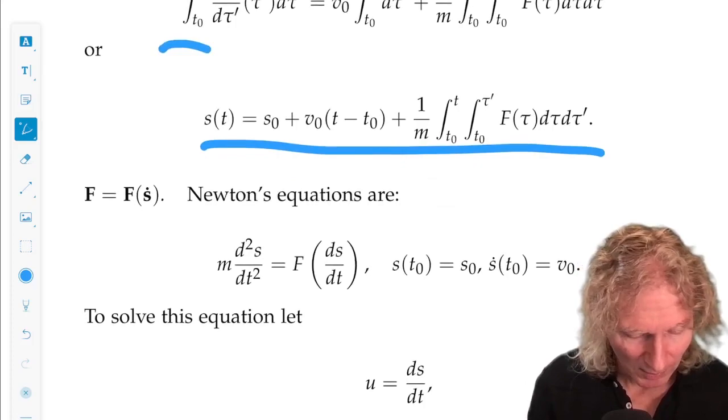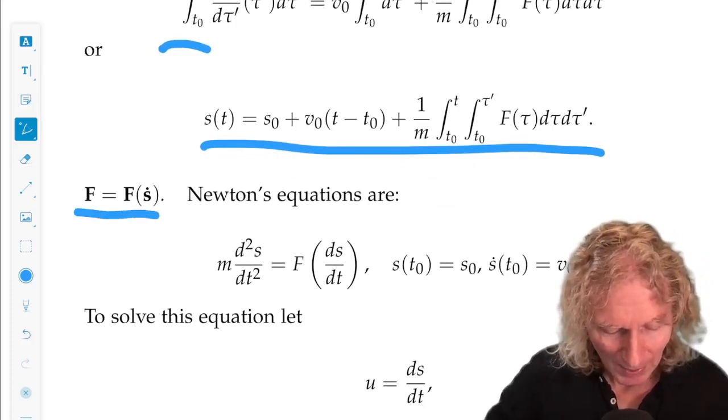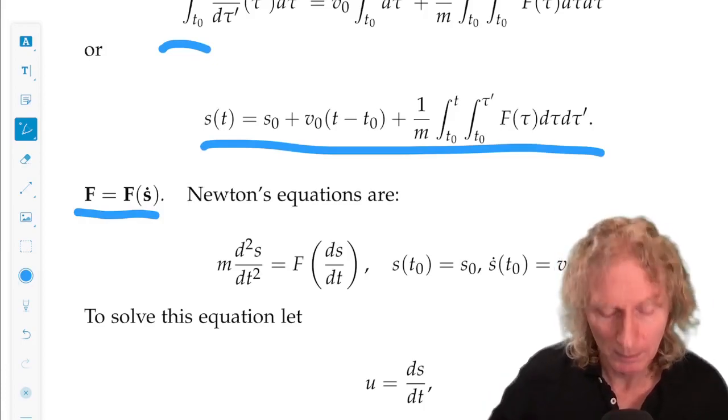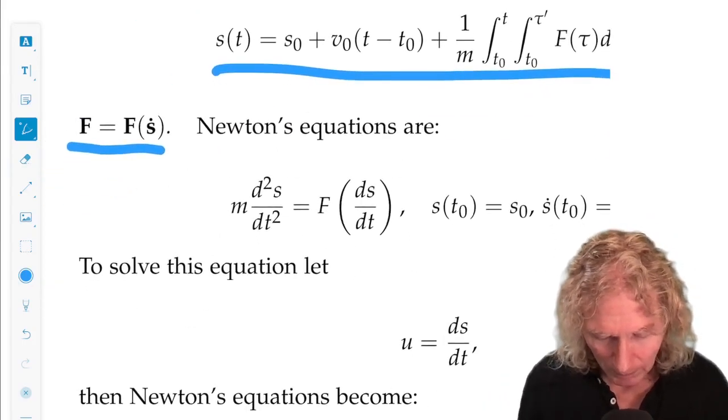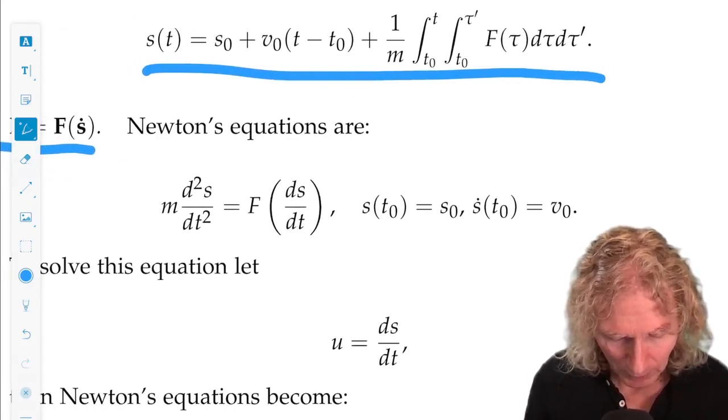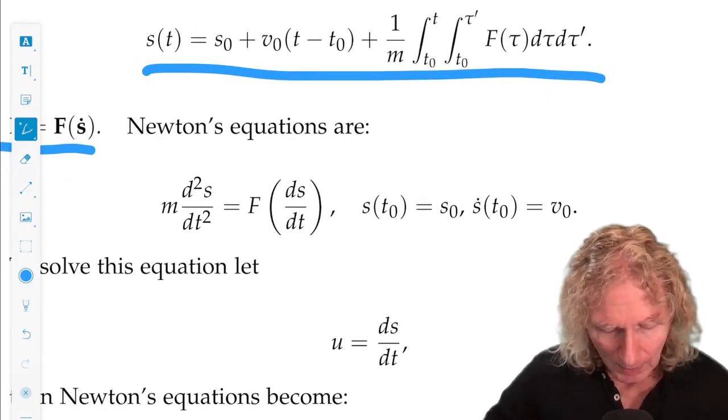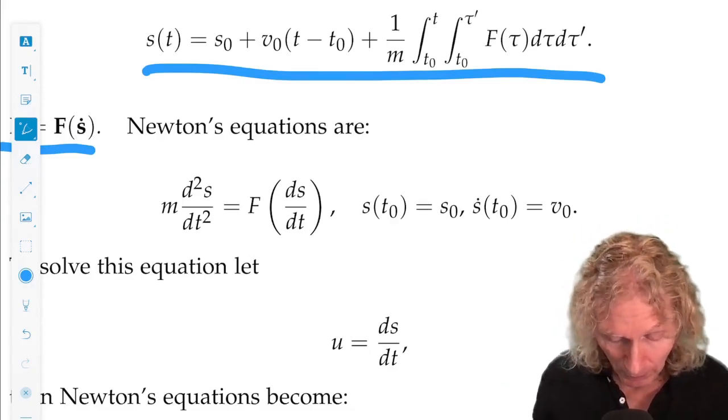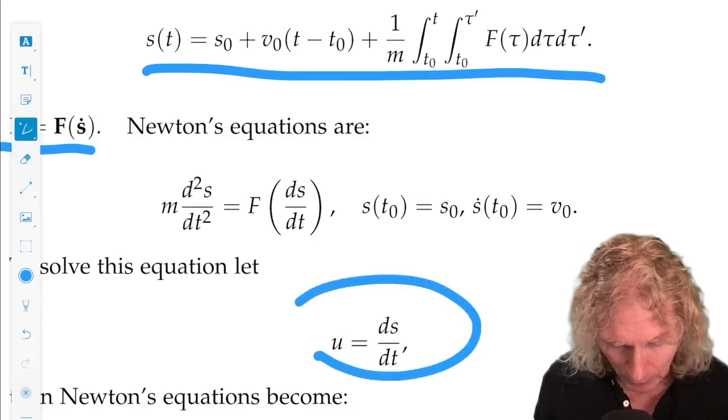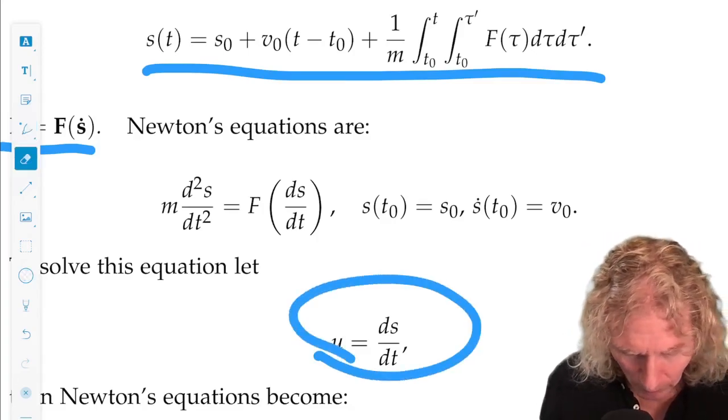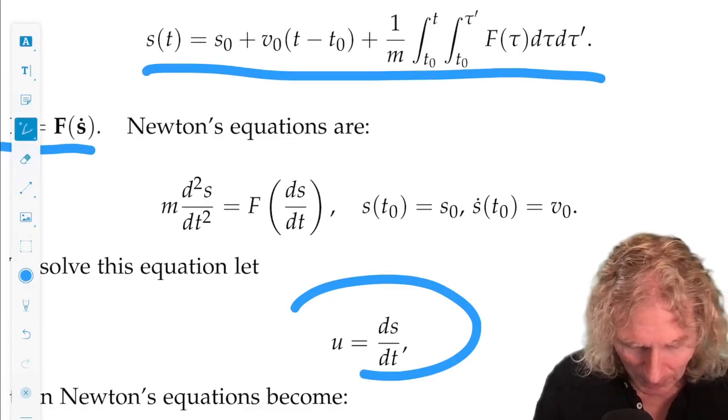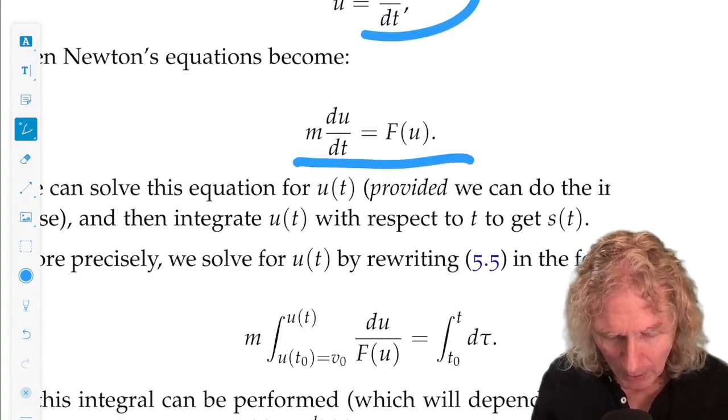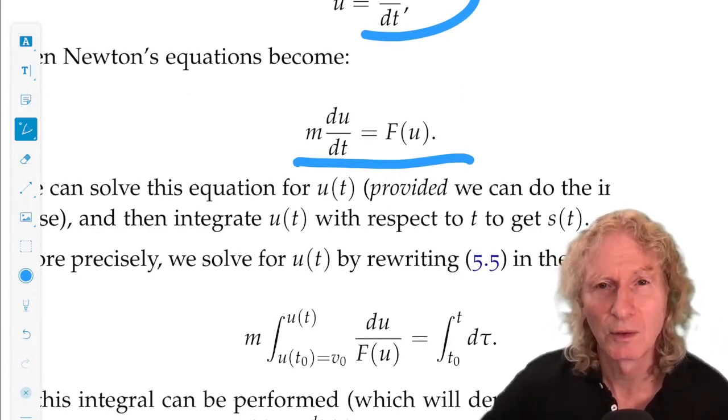Okay, now let's look. This is kind of a cool case. f is only a function of velocity, s dot. Well, look. Here's Newton's equations. This looks almost like a first-order equation for ds dt. And, in fact, if we change the variables and let u be ds dt, plug that back in to the equation, lo and behold, this is what we get.